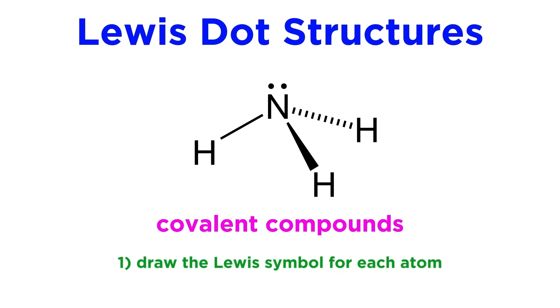we simply need to draw the Lewis symbols for each atom in the compound, and then wherever there are unpaired electrons, atoms can come together to form a covalent bond, as a covalent bond involves one electron from each of two atoms being shared between them.